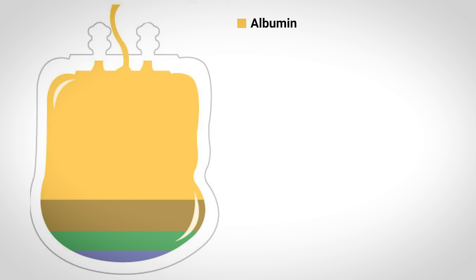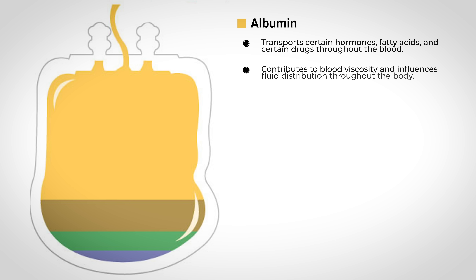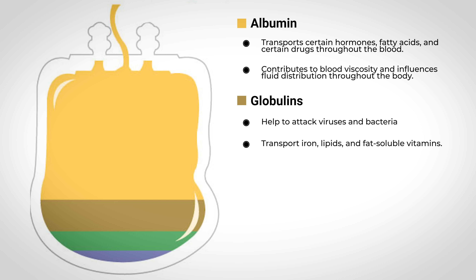Let me name a few of these plasma proteins to solidify some of the functions of blood we've previously talked about. Albumin makes up the majority of plasma proteins — it transports certain hormones, fatty acids, and even certain drugs throughout the blood, and it contributes to blood viscosity and influences fluid distribution throughout the body. Globulins help to attack viruses and bacteria, and some can also transport iron, lipids, and fat-soluble vitamins. Fibrinogen plays an essential role in blood clotting.